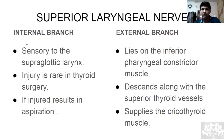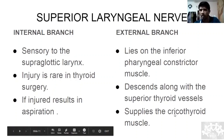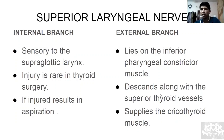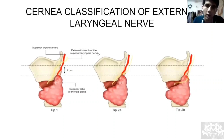Coming to the other nerve supply: you have the superior laryngeal nerve, divided into the internal and external branches. The internal is a sensory branch and the external is a motor branch. The external laryngeal nerve supplies only the cricothyroid muscle; the rest of the laryngeal/vocal cord muscles are supplied by the recurrent laryngeal nerve.